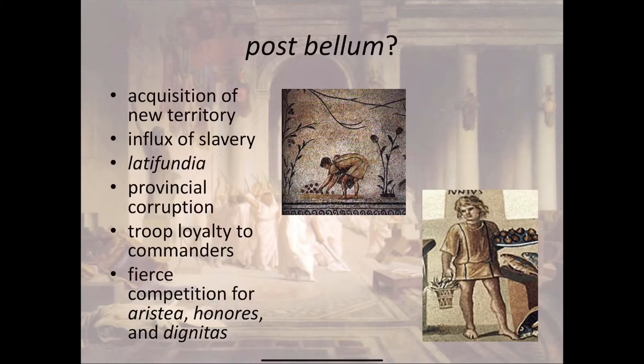The acquisition of new territory, while it seemed like a good thing and certainly brought in more money, also exerted pressures on the Roman government. This form of government, meant to govern just a single city, was now governing a vast empire. Also, because of all of Rome's military victories in Greece, North Africa, and in their acquisition of territories in Spain and around Italy, there was a vast influx of new slaves coming into Rome.